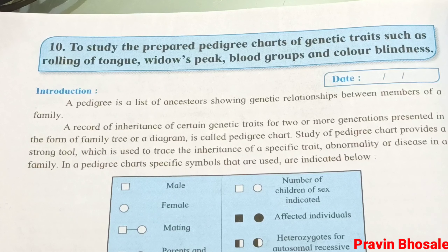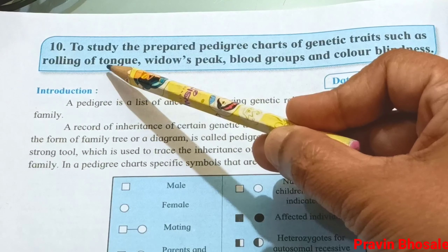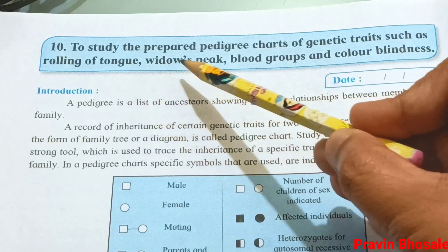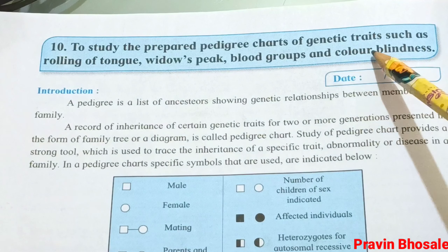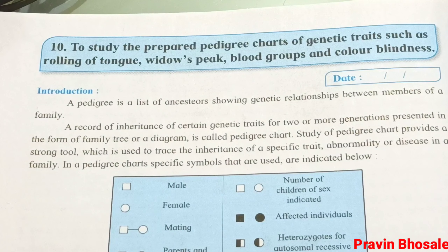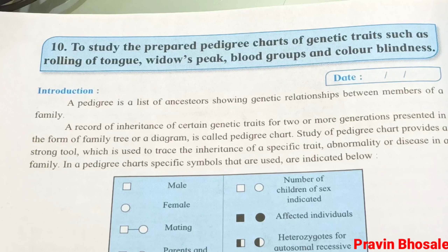Hello students. Today I will explain how to study the pedigree chart of genetic traits such as rolling of tongue, widow's peak, blood group, and color blindness. This comes in practicals in spotting to identify half mark and to comment half mark. So let's start with the practical.